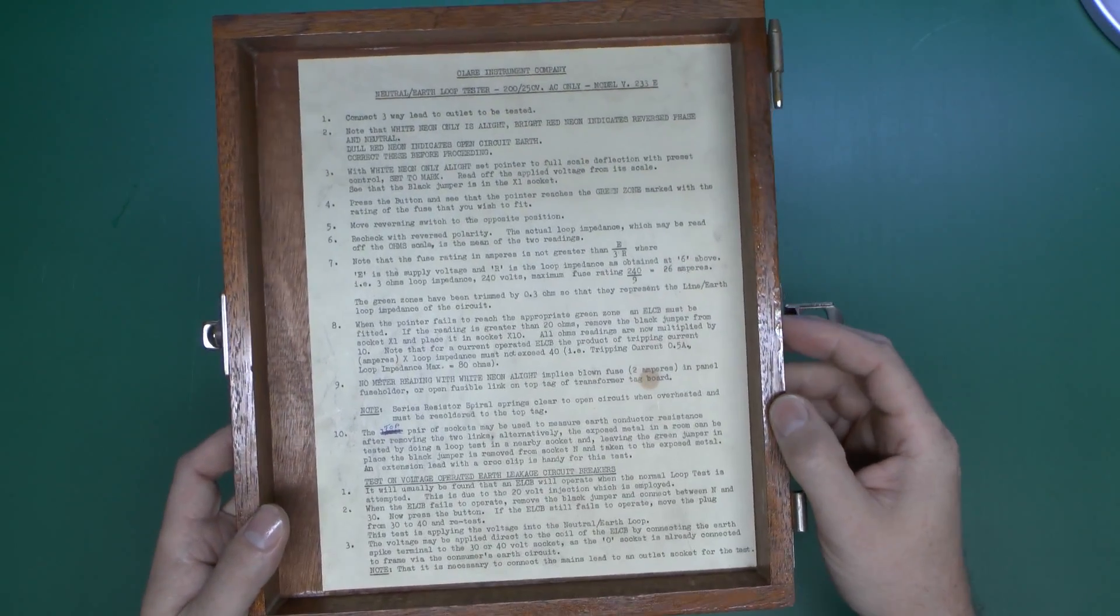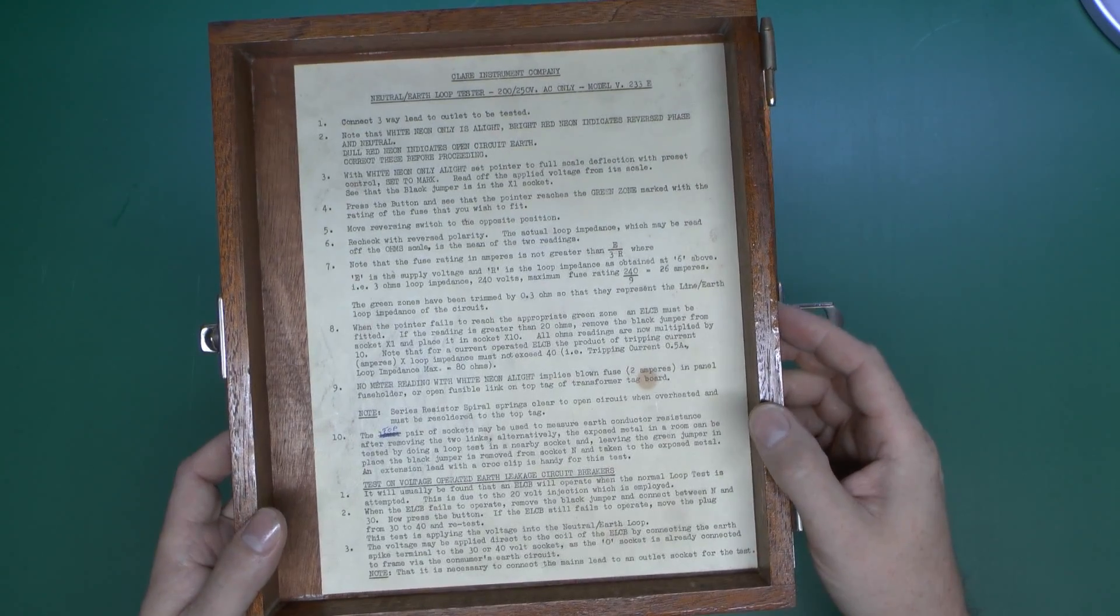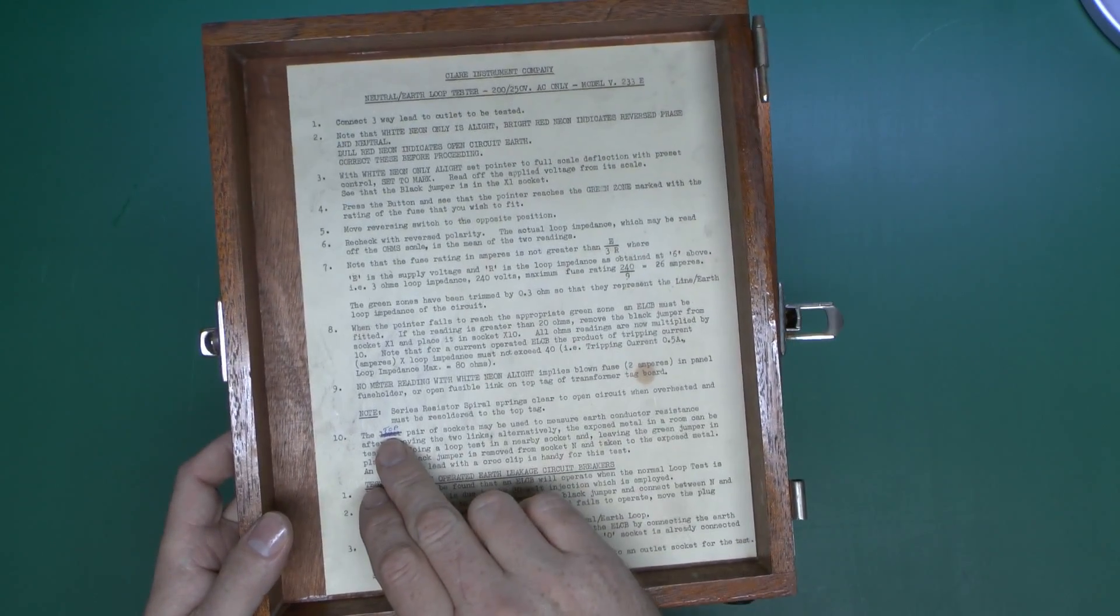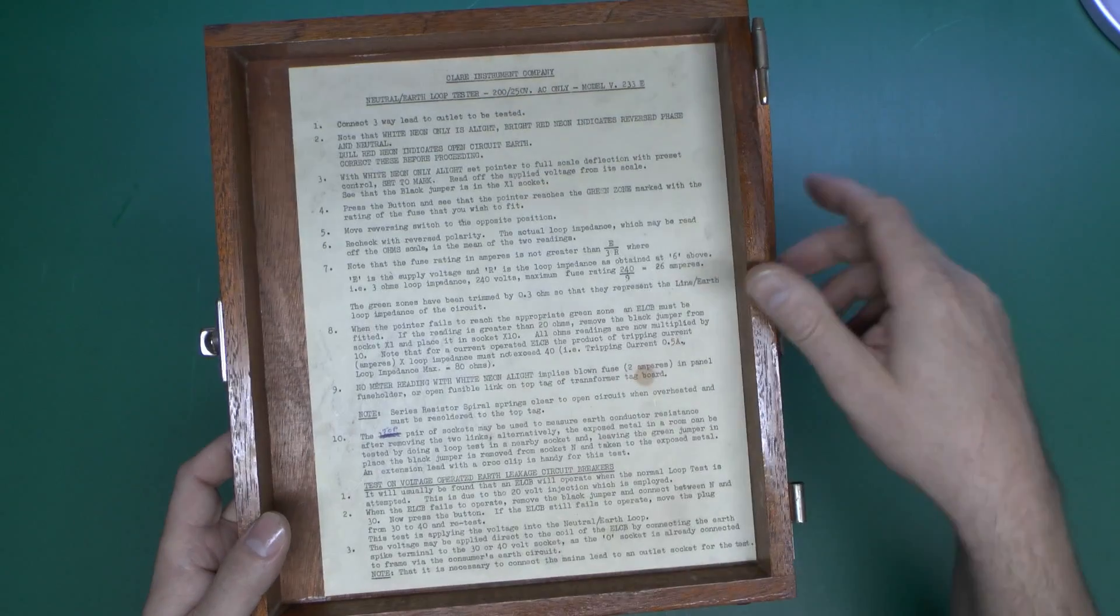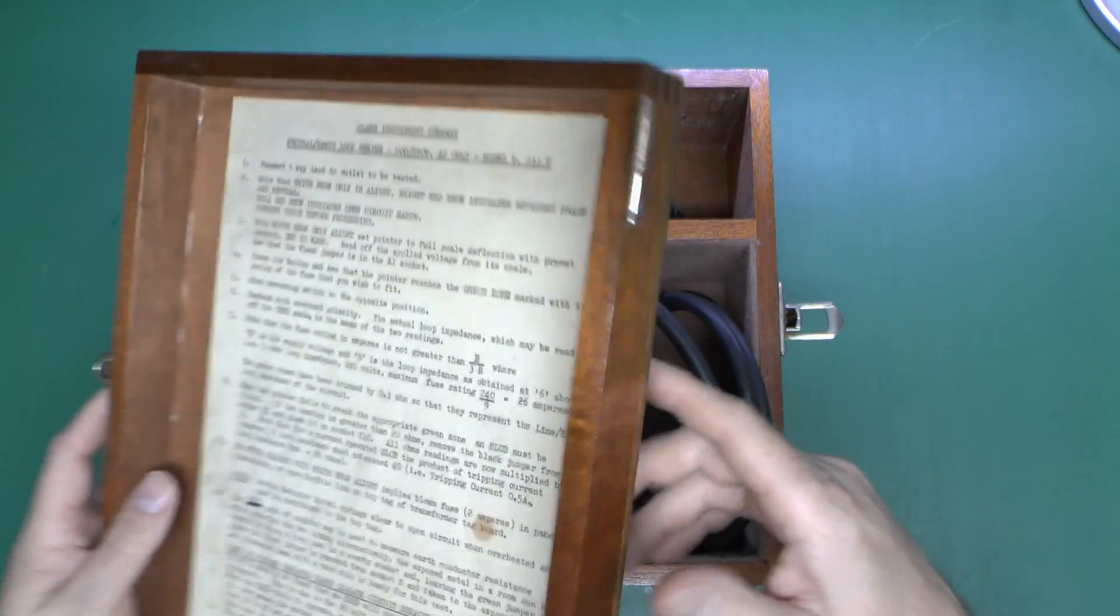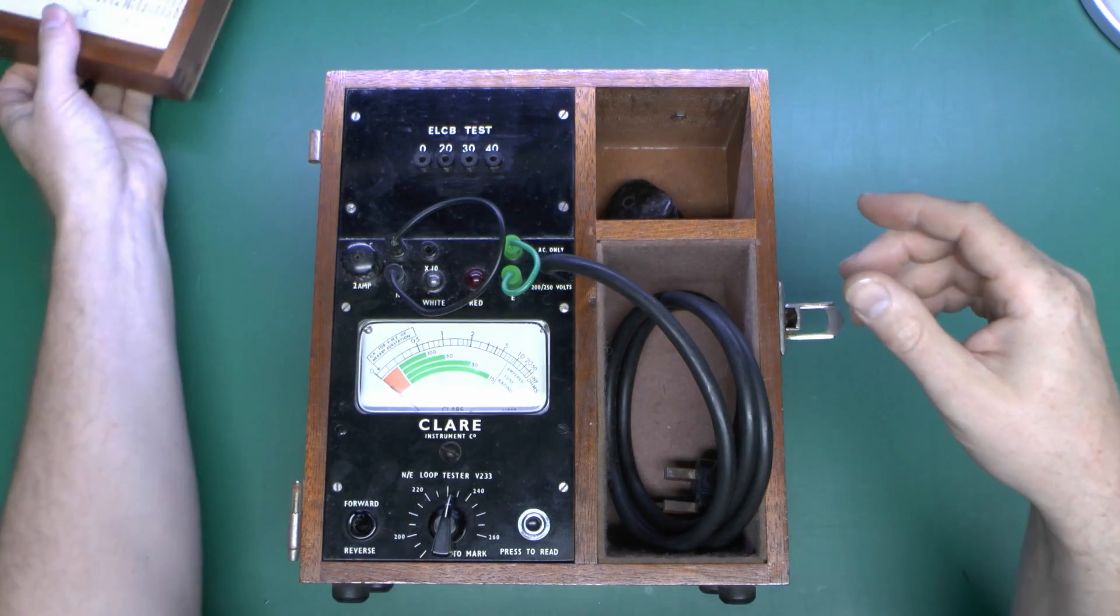It's obviously being typed out by somebody on an actual typewriter, and someone's obviously amended it here because somebody made a mistake. But anyhow, there's the lid there, so that just removes. And then inside, we've got the actual thing itself.